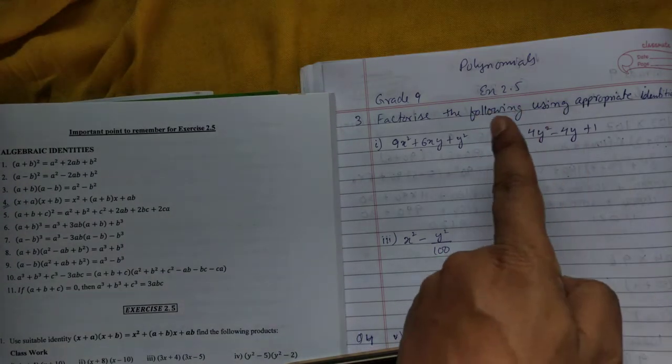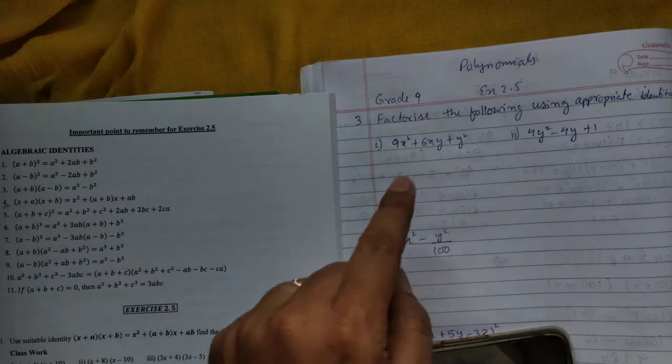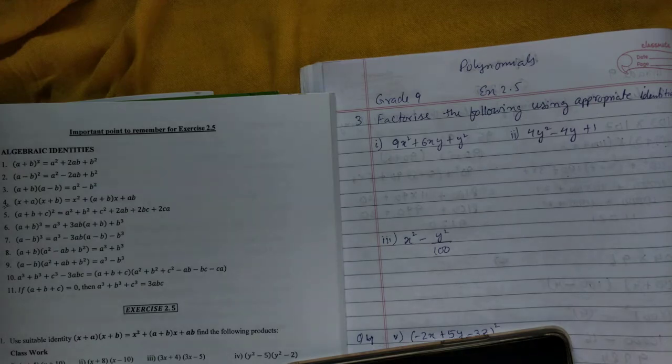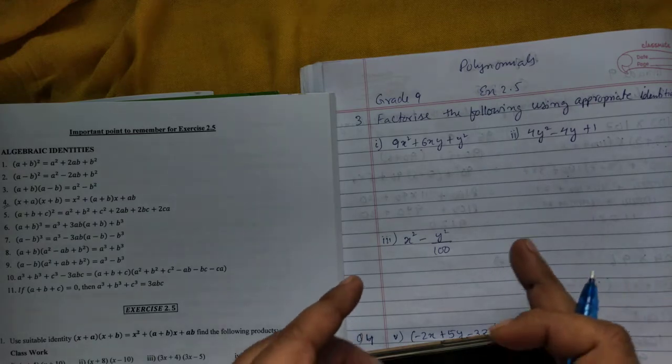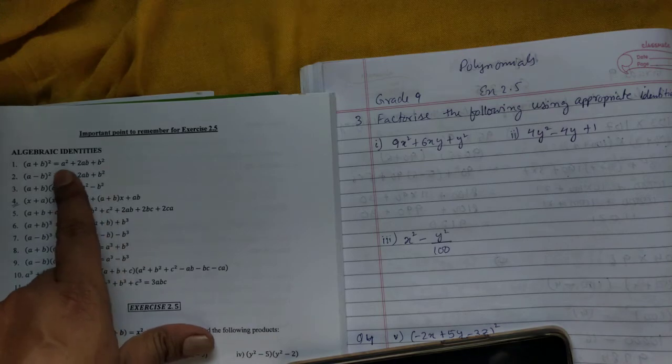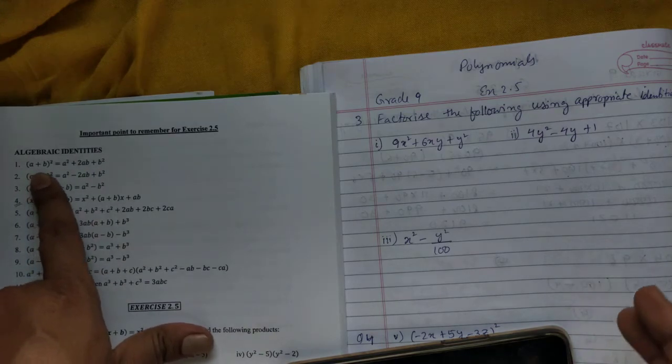This is Grade 9, Exercise 2.5, Question 3: Factorize the following using appropriate identities. Factorize means taking an expanded form and writing it in factor form. A plus B whole square means A